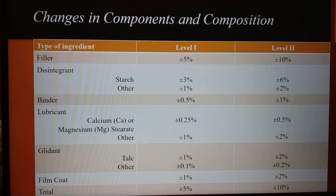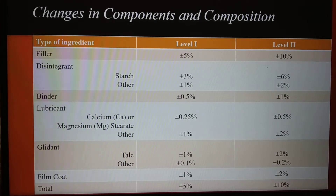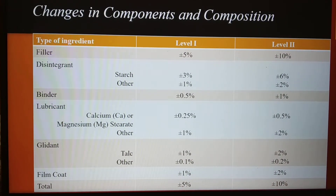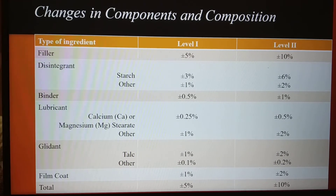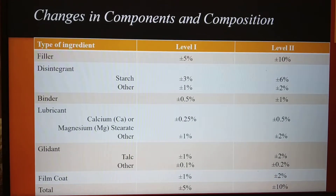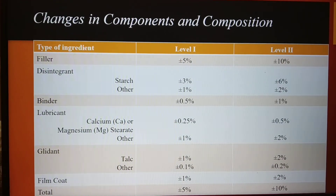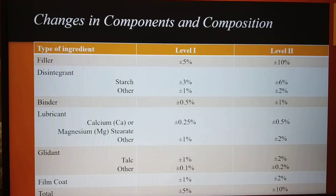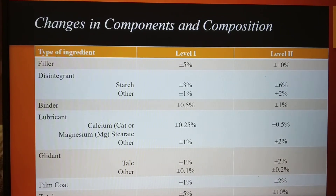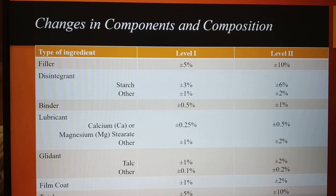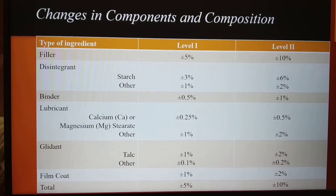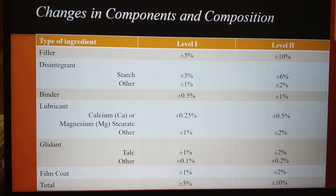Coming to Level 2 change: the filler concentration can be changed up to 10%. For disintegrant, if it is starch it can be changed up to 6%, whereas other disintegrants — super disintegrants — the allowed change is up to 2%. For binder it's 1%.